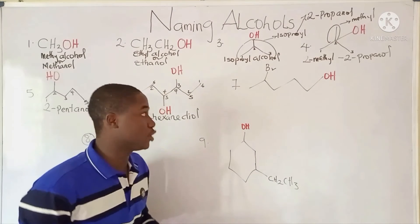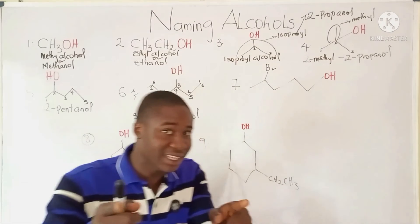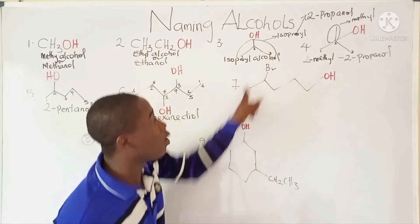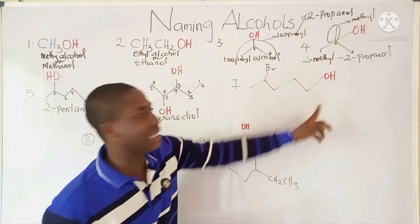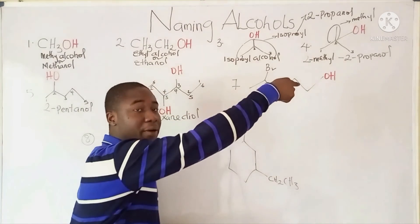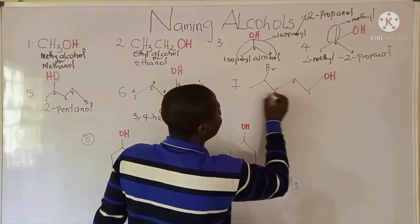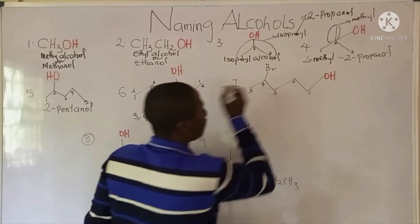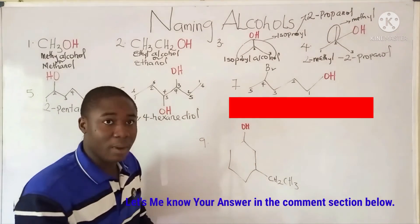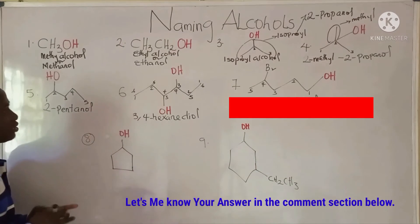Now, for this question — which group takes the parent name? The alcohol takes the parent name, not the alkyl group. So we number from the parent name. It becomes 1, 2, 3, 4, and 5 — a 5-carbon form, basically called pentanol.